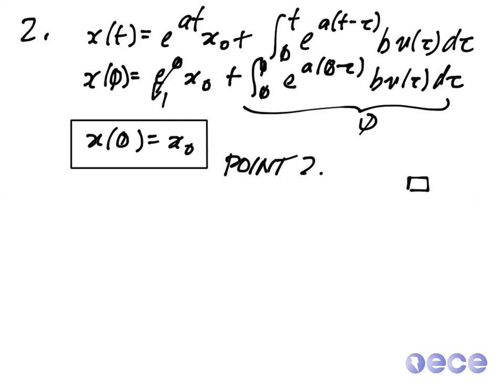This concludes our proof of the claim. We have now shown that X of T equals E to the AT times X zero plus the integral from zero to T of E to the A times T minus tau times B U of tau D tau is indeed the solution to X dot equals AX plus BU with initial condition X of zero equals X zero.